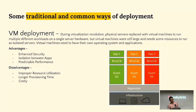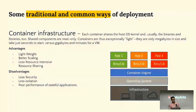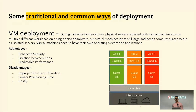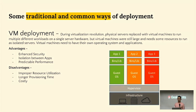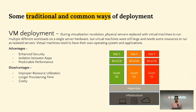Let's start by discussing some traditional and common ways of deployment. The most common approaches are VM deployment and container infrastructure. When virtualization came into picture, the first thing we started doing was setting up small VMs on an underlying OS with a hypervisor layer to talk to the kernel. So we have a hypervisor layer, and on top of it various guest OSes, each with its own binaries and libraries, with applications sitting on top.